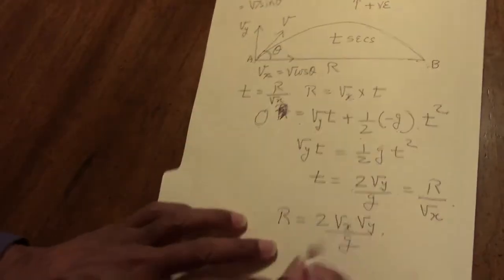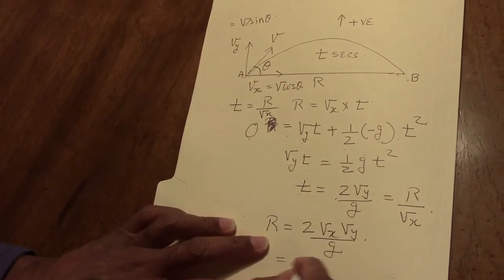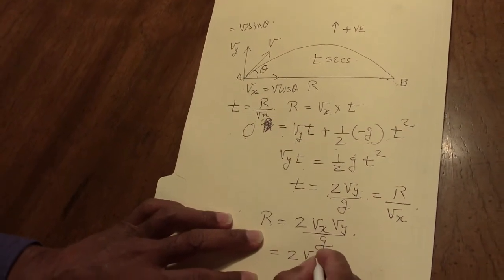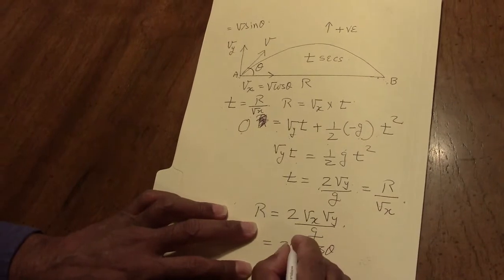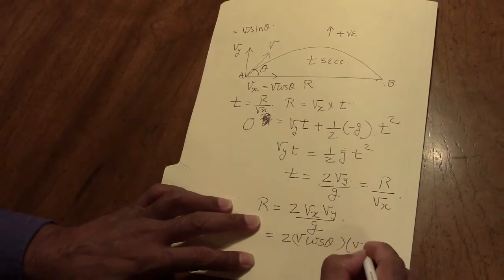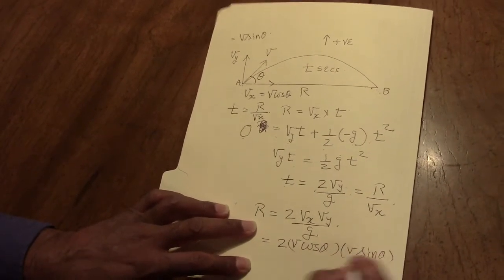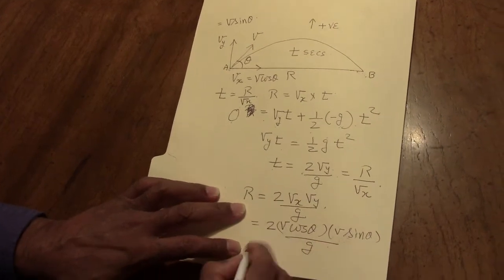So replacing the terms here, we have 2 V cos theta times V sin theta over g. That is the range.